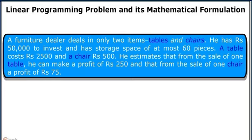A furniture dealer deals in only two items: tables and chairs. He has Rs 50,000 to invest and has a storage space of at most 60 pieces. A table costs him Rs 2500 and a chair costs him Rs 500. He estimates that from the sale of one table he can make a profit of Rs 250, and from the sale of one chair a profit of Rs 75.